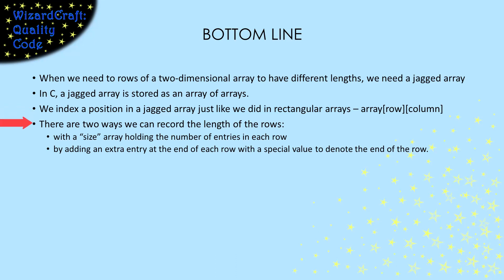As with one-dimensional arrays, there are two ways that we can record the length of each row. Either we can store the row sizes in an array that is indexed by row number and gives us the size of each row. Or we can make each row have one extra entry that contains a special value, marking the end of the row.